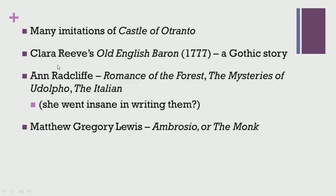Owing to the success of 'Castle of Otranto,' it led to a number of imitations. Clara Reeve's 'Old English Baron,' published in 1777, gained much popularity as a gothic story. Radcliffe went on to write several gothic romances including 'Romance of the Forest,' 'The Mysteries of Udolpho,' and 'The Italian.' Matthew Gregory Lewis, who wrote 'Ambrosio or The Monk,' was also credited as one of the earliest gothic writers.